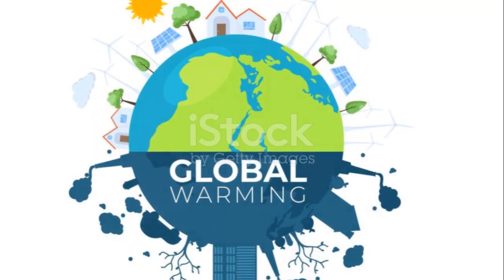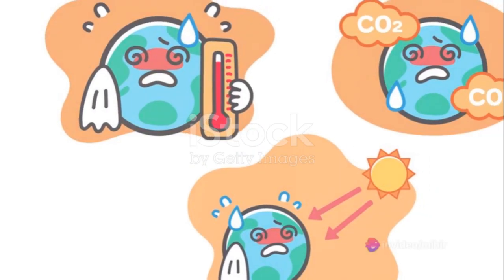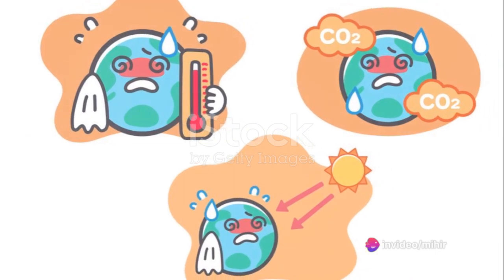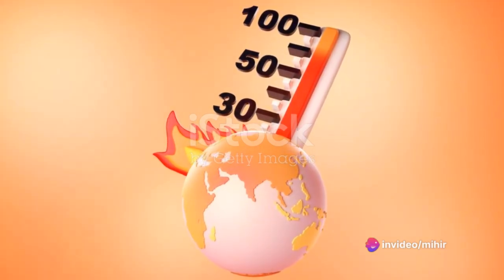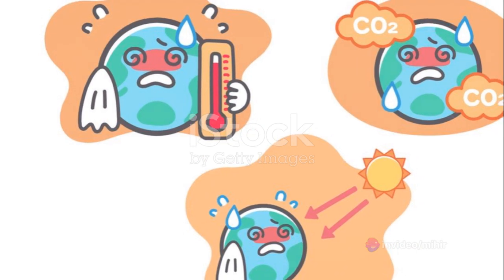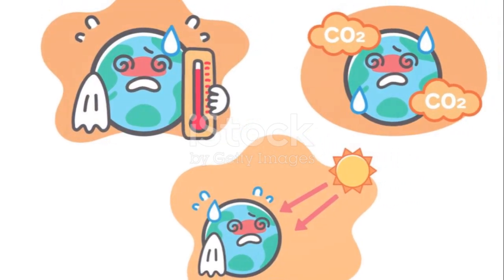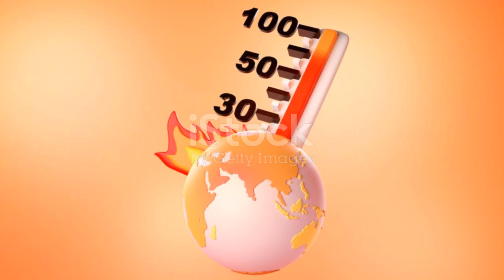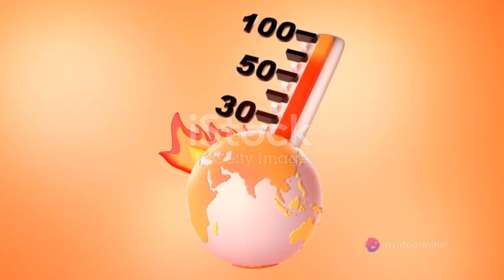We've come a long way — from cave paintings to virtual reality, from stone tools to artificial intelligence. However, this rapid progress hasn't come without a cost. Human activities have significantly impacted our planet. Deforestation, pollution, overpopulation, and overconsumption have led to environmental degradation. The burning of fossil fuels has resulted in climate change, a global concern that threatens biodiversity and human life. Climate change isn't just about warmer temperatures or melting ice caps; it's about more frequent and severe weather events, rising sea levels, and shifting wildlife populations and habitats.